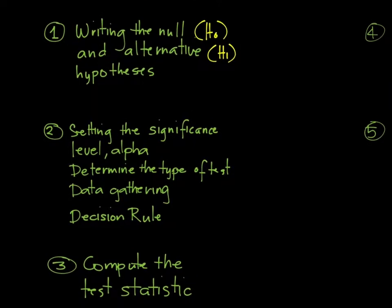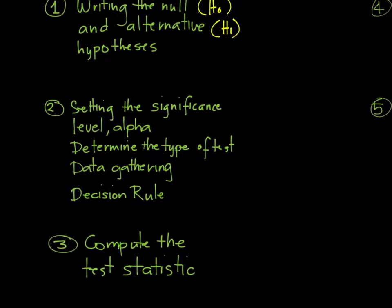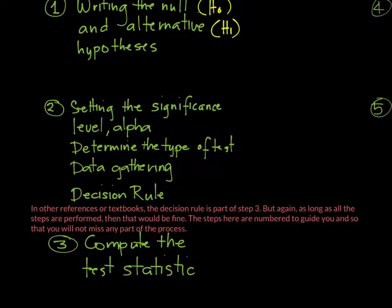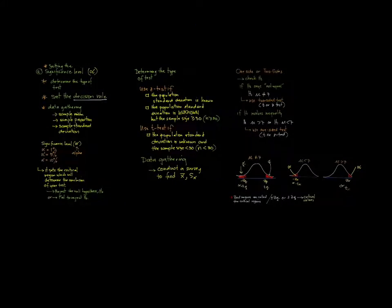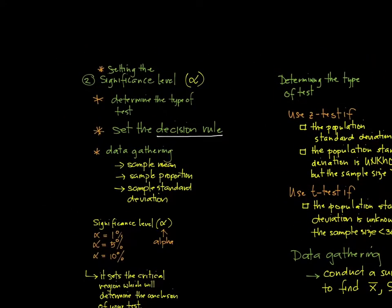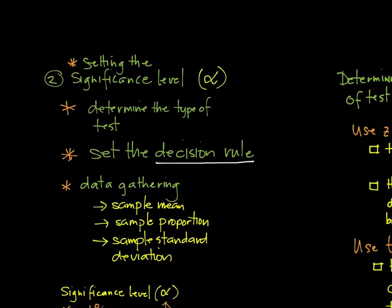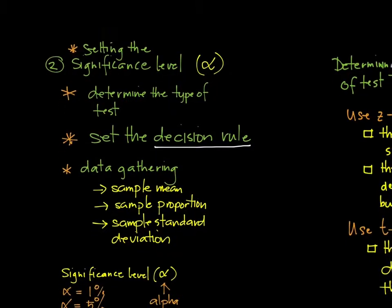We now go to step number two — the setting of the significance level alpha. We will also cover how to determine the type of test, the data gathering, and the decision rule. This is where we set the significance level, determine the type of test, and set the decision rule. This will signal us to do data gathering — finding values such as the sample mean, sample proportion, or sample standard deviation depending on what the study is about.